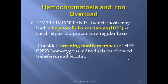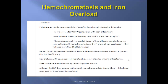Consider screening family members of HFE C282Y homozygous individuals for elevated transferrin saturation and ferritin. Treatment: phlebotomy. Initiate once ferritin is more than 300 in males or more than 200 in females. You may decrease ferritin 30 points with each phlebotomy. Continue with weekly phlebotomy until ferritin is less than 50. Normally removal of one gram of iron will cause anemia; however, since patients with hemochromatosis are three to four grams of iron overloaded, they will need more than 10 phlebotomies.